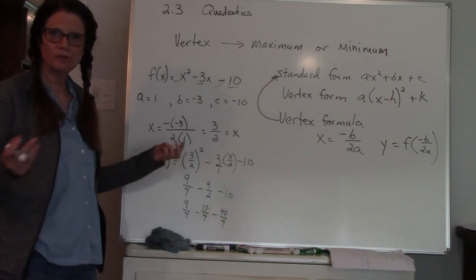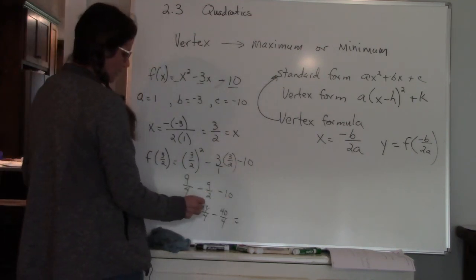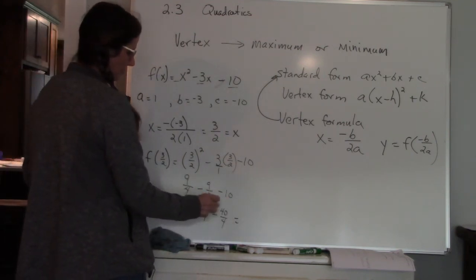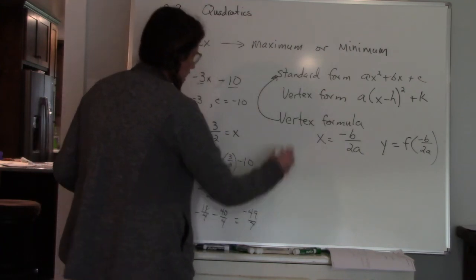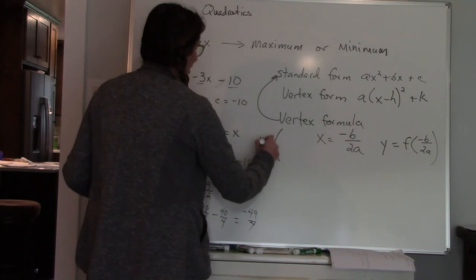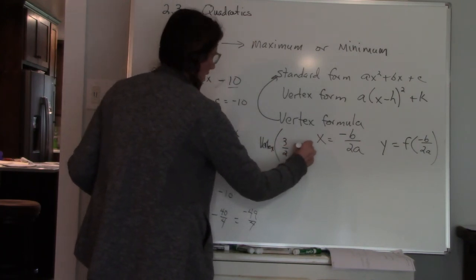So negative forty over four is negative ten, and there's my common denominator. So now nine minus eighteen is negative nine. Negative nine minus forty is negative forty-nine fourths. So my vertex is at three halves and negative forty-nine fourths. Now does that mean anything to you? Well yeah, it does—it's the point that is either